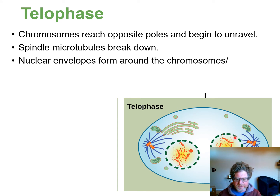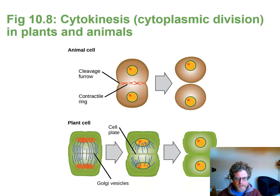In telophase, the nuclear envelope reforms and the DNA unwinds — now you have two nuclei. Then the cytoplasm splits after mitosis during cytokinesis. In animal cells, cytokinesis involves a ring of proteins that forms a cleavage furrow and splits the cytoplasm.